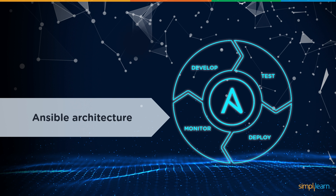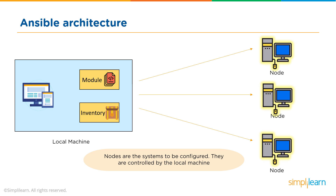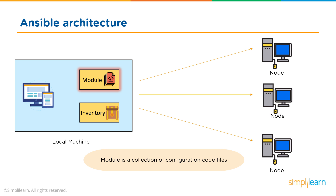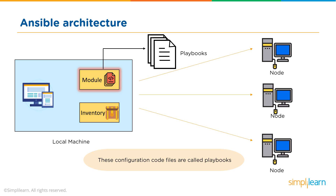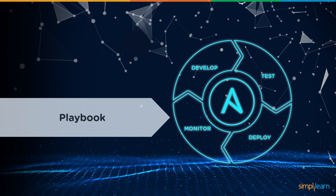Let's step through the architecture of an Ansible environment. The first thing you need is a local machine — this is where you have all your instructions and the control you'll push out to remote servers. Connected from the local machine are all the different nodes receiving the different configurations. The configurations you write in code are within modules, and each of these modules contains playbooks. The local machine also manages the inventory of the nodes in your environment. It connects to each of the different nodes in your hardware network through SSH — a secure client connection.